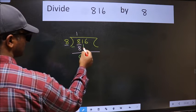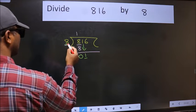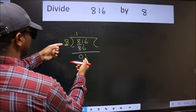After this, bring down the beside number. 1 down. Now here we have 1 and here 8. 1 is smaller than 8.